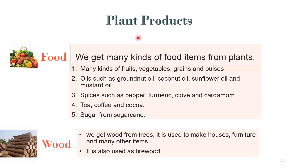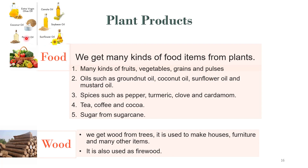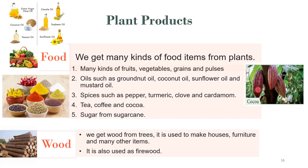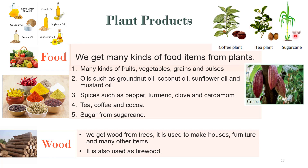Now let's discuss the plant products we use in our day-to-day lives. The first product is food — we get many kinds of food items from plants: fruits, vegetables, grains and pulses. Oils such as groundnut oil, coconut oil, sunflower oil, mustard oil, soybean oil and olive oil all come from plants. Spices such as pepper, turmeric, clove and cardamom also come from plants. Tea, coffee, cocoa and sugarcane for sugar also come from plants.